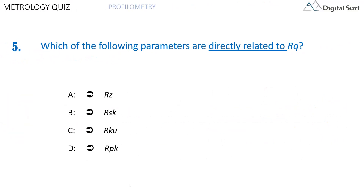Question number five. Which of the following parameters are directly related to RQ? Answer A: RZ. Answer B: RSK. Answer C: RKU. Answer D: RPK. Multiple answers are allowed.